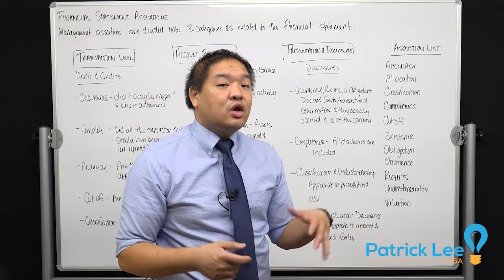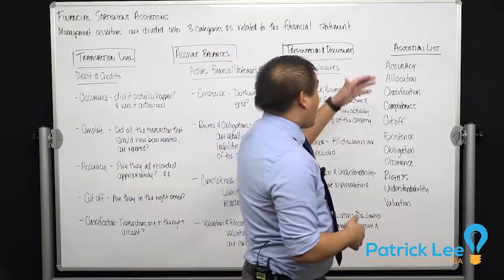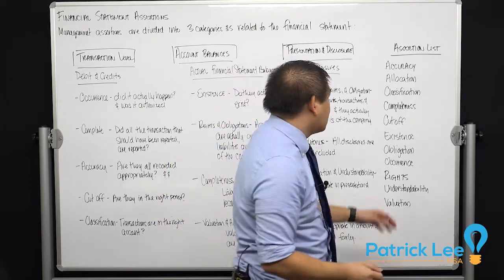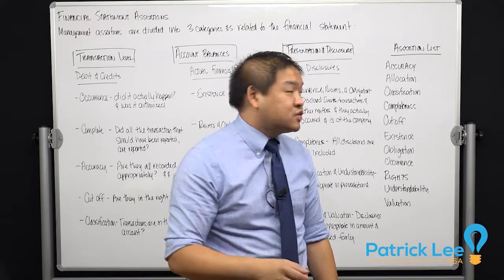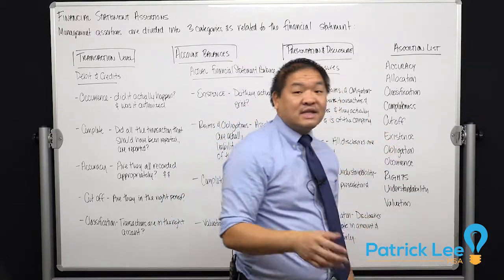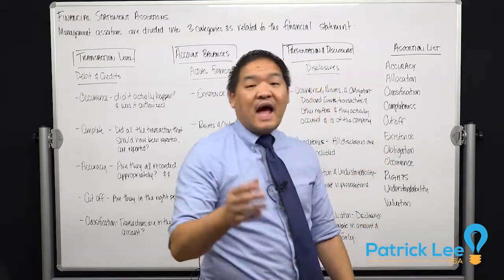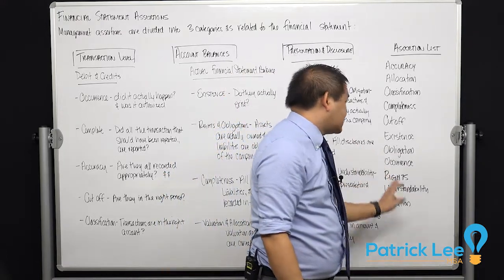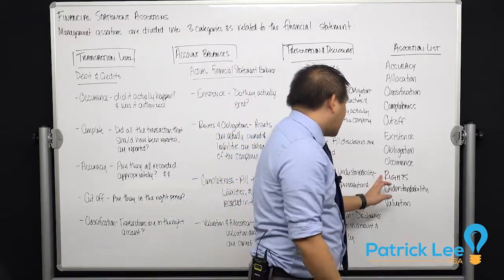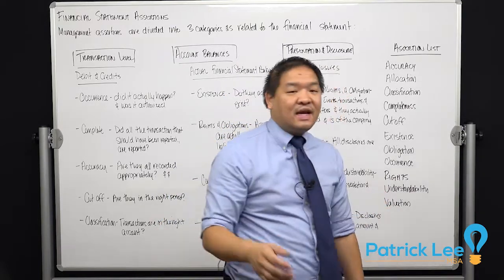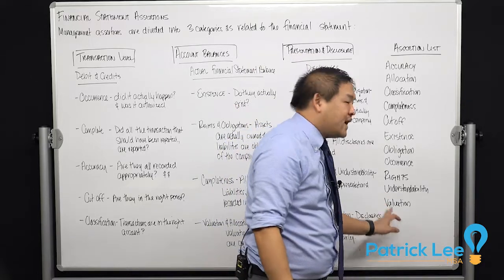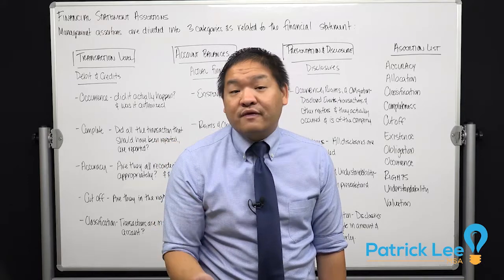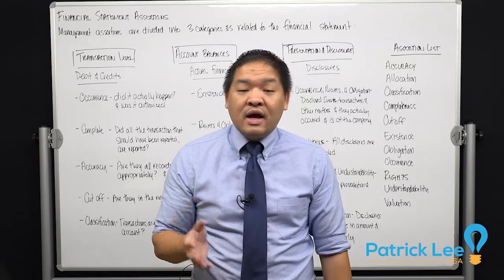Here are all the assertions we could be looking at when examining a financial statement. Accuracy — we want to make sure things are accurately recorded. Allocation — are they allocated the right way. Classification — how are they classified in the financial statements. Completeness — is it complete. Cutoff — is it in the right period. Existence — do the assets actually exist. Obligations — do we actually owe that money. Occurrence — did the transaction actually occur. Rights and obligations — does the company actually own it. Understandability — can the reader understand the financial statements. Valuation — are things valued correctly, whether at fair value or book value.